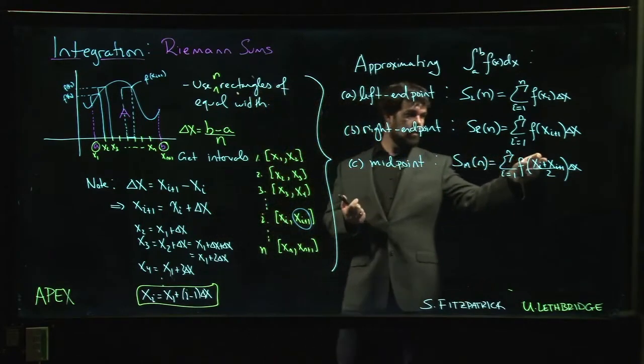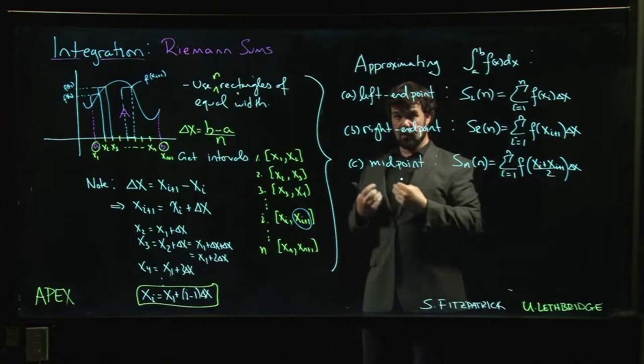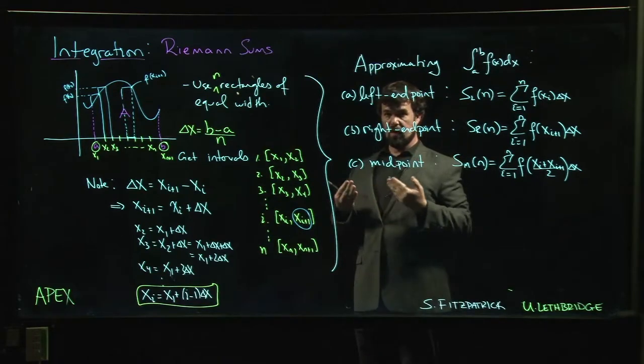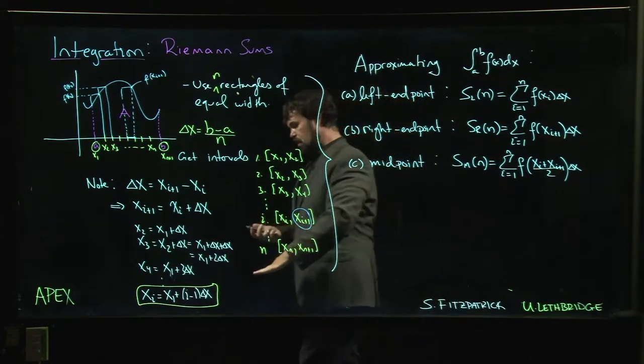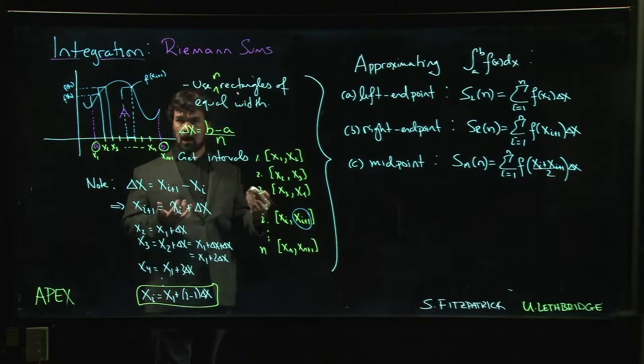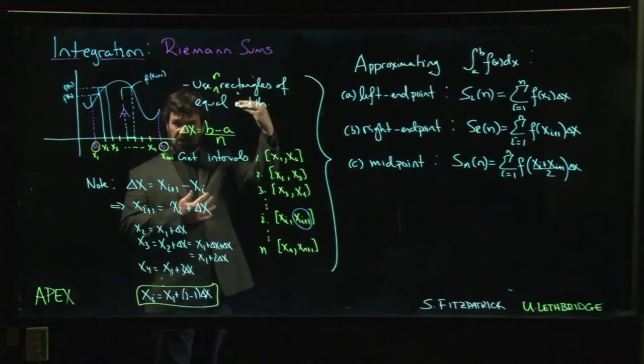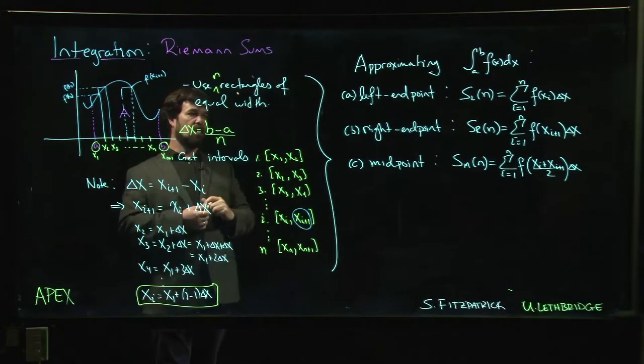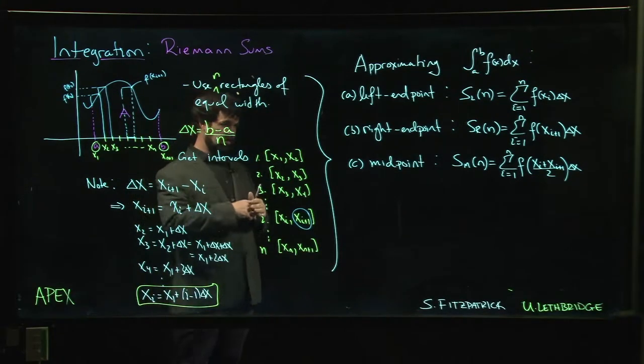If you choose the minimum on every interval and use that for the height of your rectangle, you get what's called a lower sum, which is the lowest possible underestimate for your area. If you choose the maximum, you get the upper sum, which is the biggest possible overestimate for your area, and the true value lies somewhere in between.